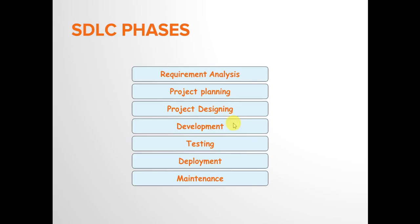After designing, the development phase begins. The flowchart is broken down into smaller units and each unit is given to the developers. Developers work on those units to write the code and achieve the assigned tasks.